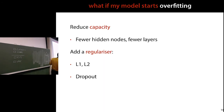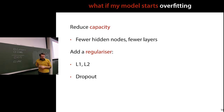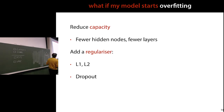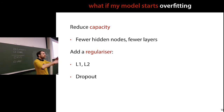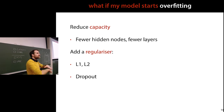So what do you do about overfitting? The first approach is to reduce capacity — if your model is memorizing the data, give it less memory: fewer hidden nodes, less capacity for remembering. That's always worth trying. You can also add a regularizer. Reducing capacity makes your whole model class simpler, whereas adding a regularizer is a soft way of doing that — giving the model a preference for simpler models while the full model class stays the same.